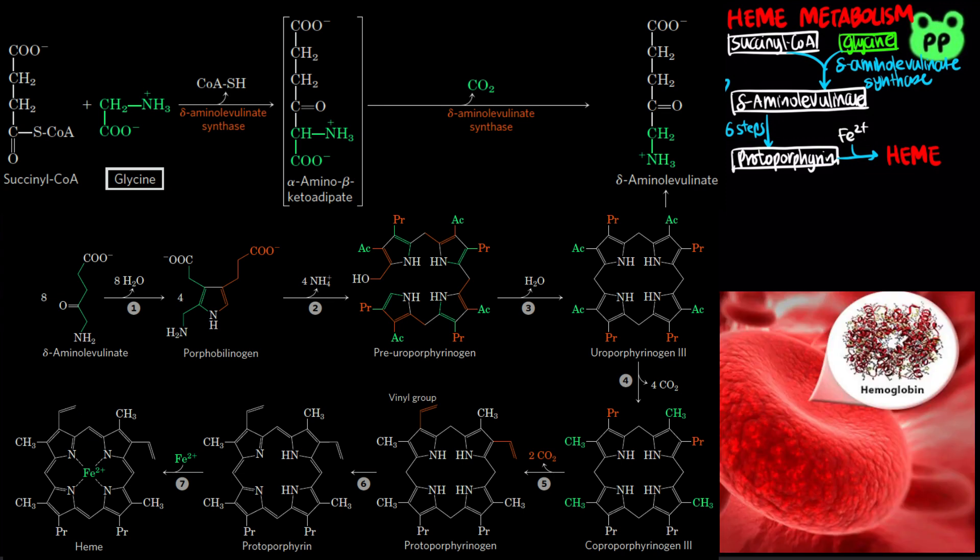Heme is incorporated into hemoglobin in red blood cells and functions in transporting oxygen between lungs and body tissues. Heme gives the blood its red color.